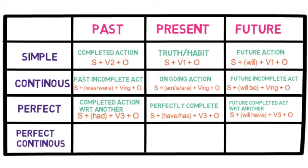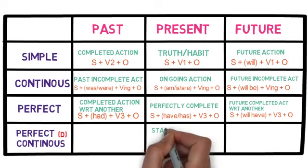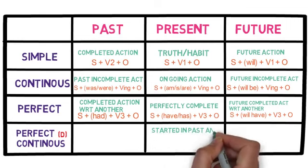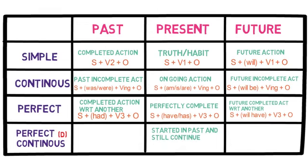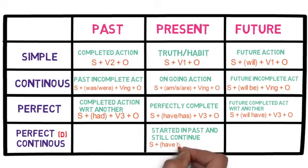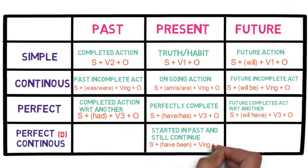Now let's look into the perfect continuous tenses. In all of them, more importance is given to the duration of action. In the present perfect continuous tense, we refer to an action that started in the past and is still continuing in the present. The structure is subject plus have been plus verb's -ing form plus object.